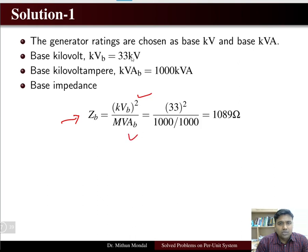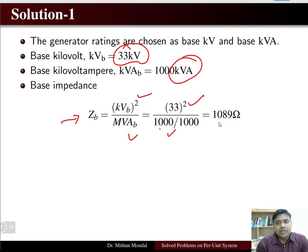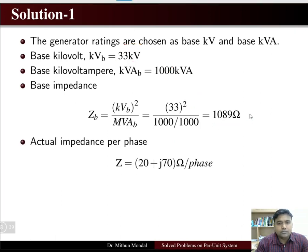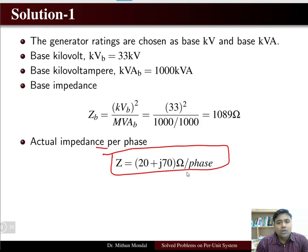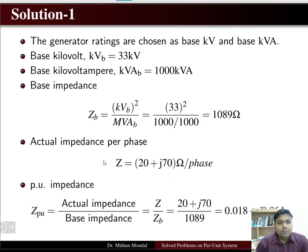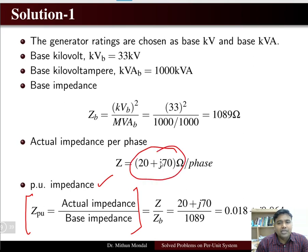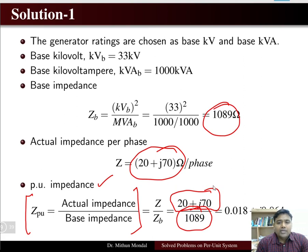The base impedance formula gives us kV base squared divided by MVA base. With kV base = 33 kV and MVA base = 1 MVA (converting 1000 kVA), the base impedance is 1089 ohms. The actual impedance per phase is 20 + j70 ohms. The per unit impedance equals actual impedance divided by base impedance, giving (20 + j70) / 1089. Note that the actual value is a complex quantity but the base value is always real.